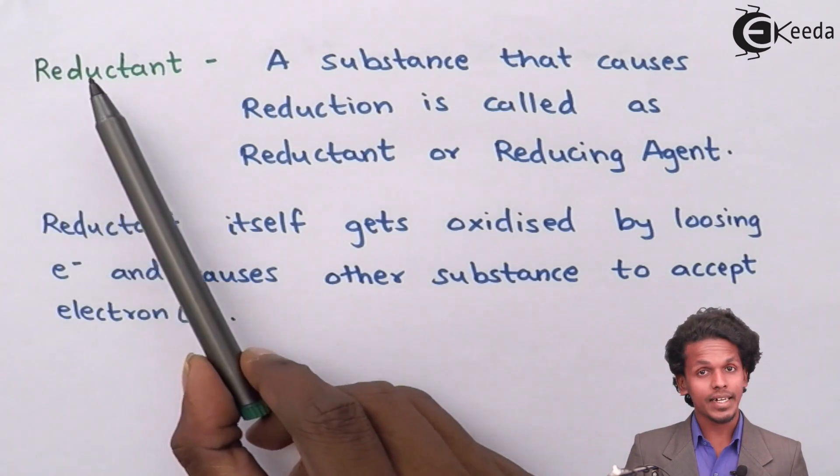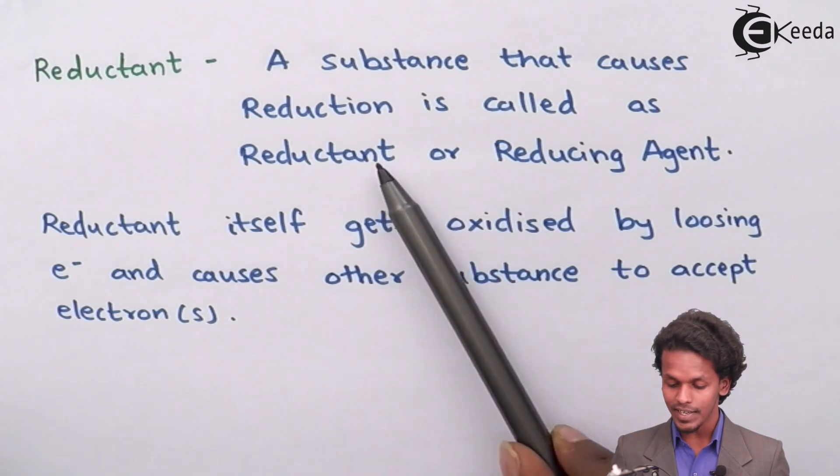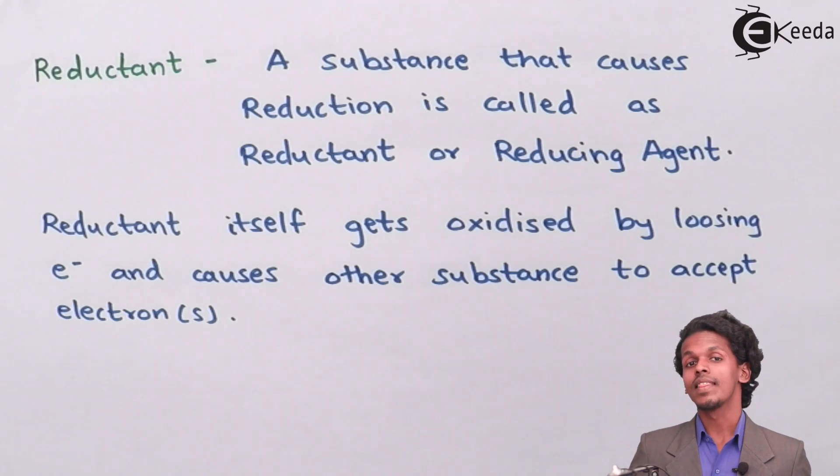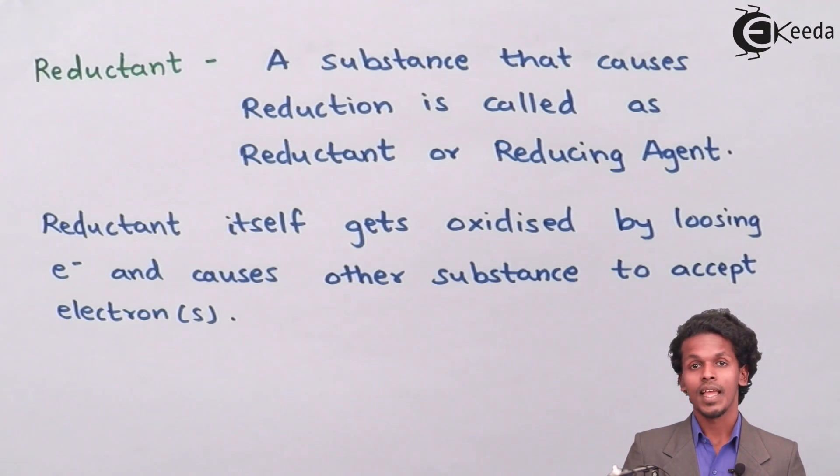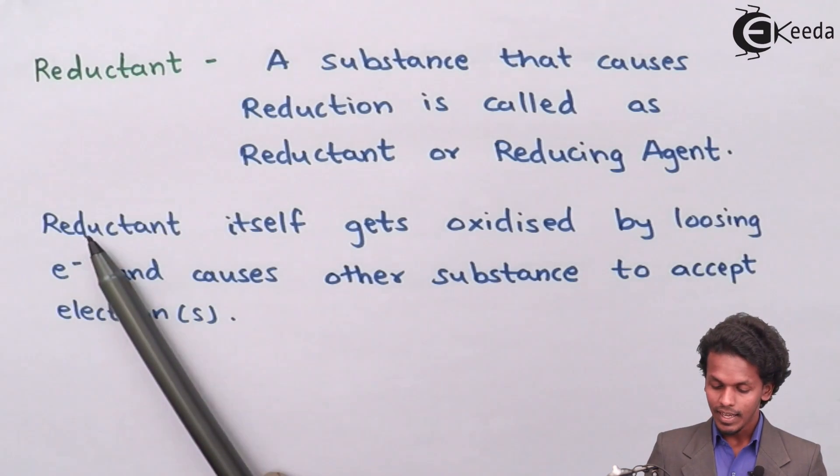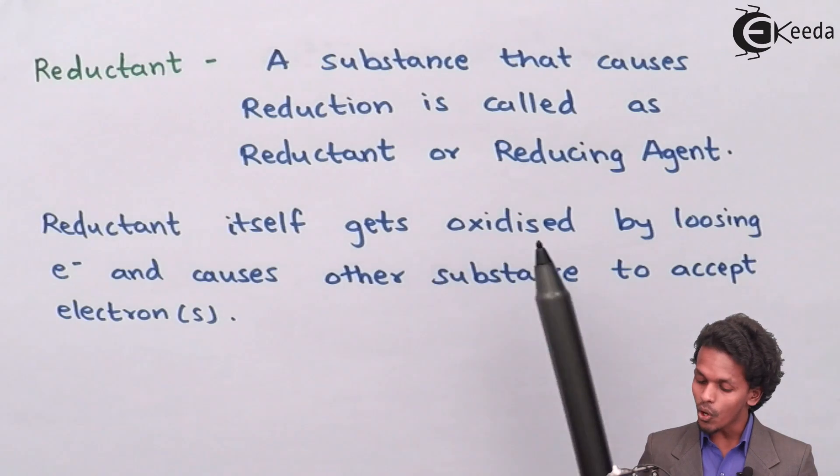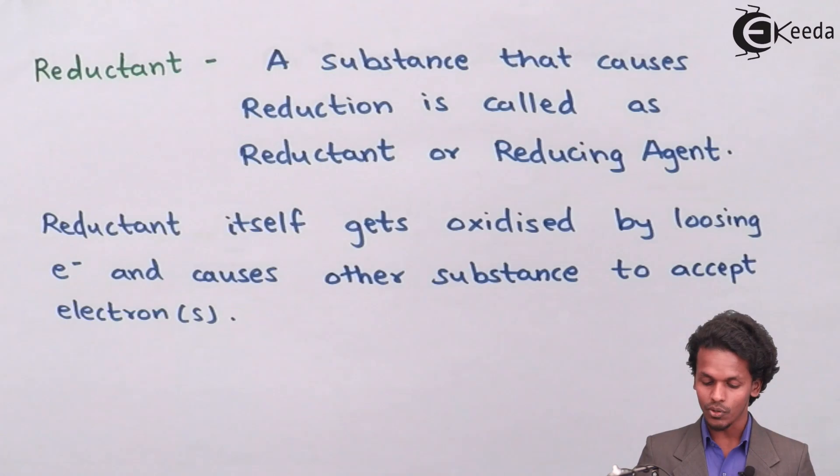Let us see about reductant. A substance that causes reduction is called as reductant or reducing agent. This helps in the reduction process. Reductant itself gets oxidized by losing electron and causes the other substance to accept electron.